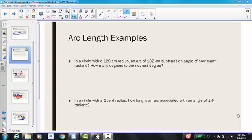Now we're going to look at two different examples. The first example says, in a circle with a 120 cm radius, an arc of 132 cm subtends an angle of how many radians, and how many degrees to the nearest degree.